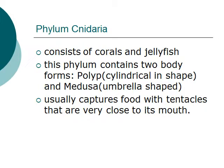The Phylum Cnidaria consists of corals and jellyfish. A common feature of this phylum is that it usually contains two body forms: the polyp, which is cylindrical in shape, and the medusa, which is umbrella shaped. It usually captures food with tentacles that are very close to its mouth.